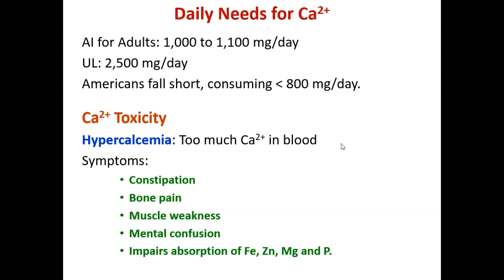Excess calcium displaces other divalent minerals such as iron and zinc because they share the same transporter in the intestines — they all carry a 2+ charge. If there is too much calcium, it has greater affinity for the transporter, leaving no transporters for other divalent minerals. This means balance in intake of divalent minerals is important so absorption of other minerals is not compromised — a problem that commonly arises from taking supplements.